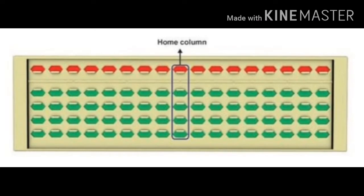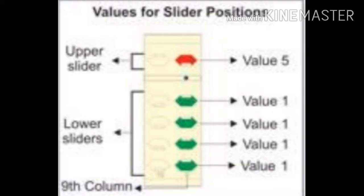Now students, here in front of you one Abacus tool is there. The mid rod is called the home column. It is the rod from where all the calculations are being done. Now let's take the value of the beads. The home column is the main rod and its value is 1. The lower bead value is 1 and the upper bead value is 5.